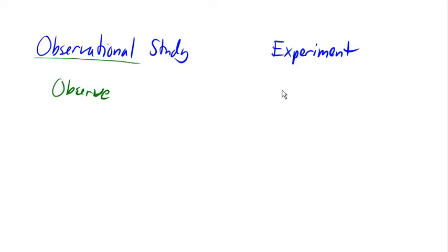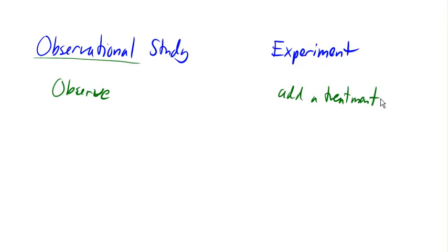Experiments, instead, add what's called a treatment. In other words, they do something to people or things and observe the results of that treatment. So it could be having people take a pill, or trying out a new paint on a wall. Any of these things could be treatments, and then you observe the result of that treatment.